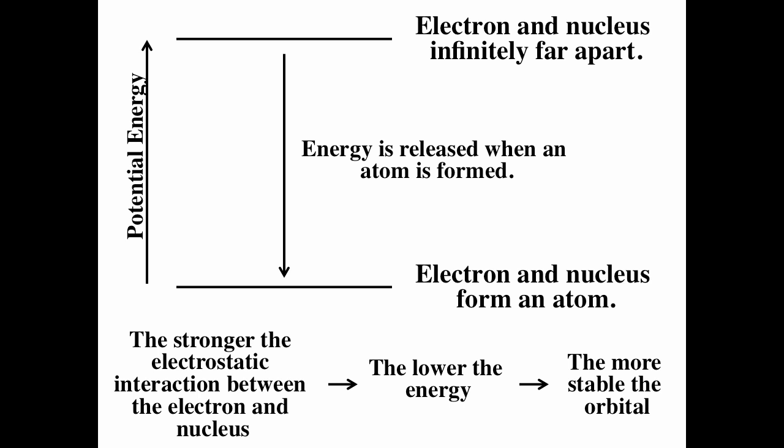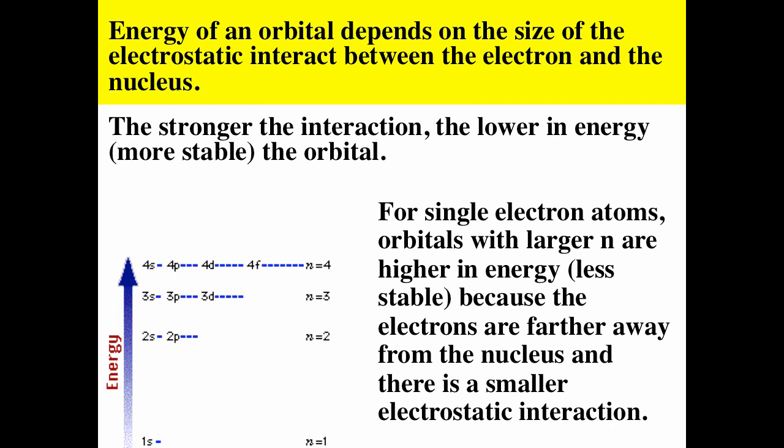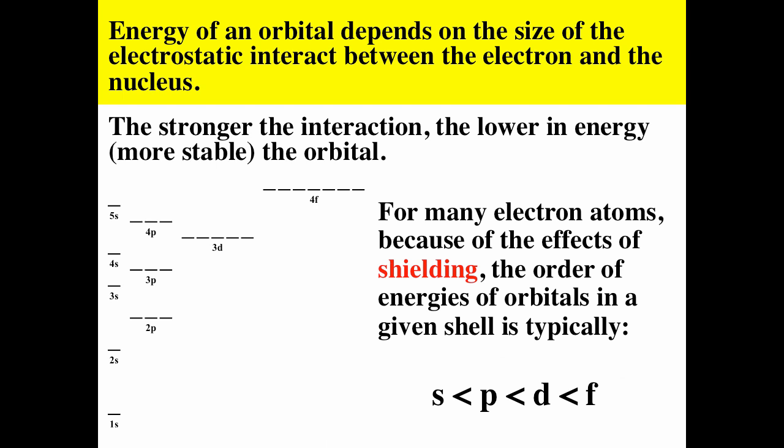For a single electron atom, the energy of the orbital depends only on the shell n. So for a single electron atom or ion — like the hydrogen atom, helium +1 ion, or lithium +2 ion — the 2s and 2p orbitals have the same energy, and the 3s, 3p, and 3d orbitals have the same energy. Once we have a multiple electron atom, we get shielding. Because the s orbital is closer to the nucleus than p, it gets shielded less. So s is lower in energy than p, which is lower than d, which is lower than f in any particular shell.